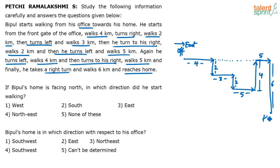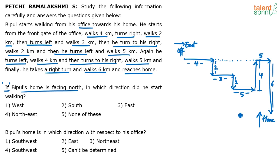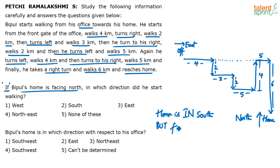This final point is his home. He started from office, traced all this path, and reached home. Nothing has been given about direction — we don't even know whether he entered the home in the right direction. So let's look at the first question: if Bipul's home is facing north, in which direction did he start walking? The key word here is 'if.' His home is here. Home being in south is different from home facing north.